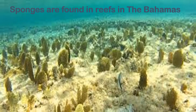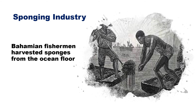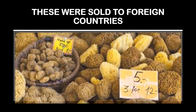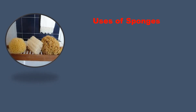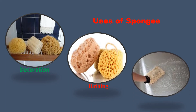You may find this invertebrate — sponges — in reefs in the Bahamas. Long ago, there were so many sponges in the Bahamas that we had a sponging industry. Bahamian fishermen harvested sponges from the ocean floor, and the sponges were gathered and sold to foreign countries. Today, people use sponges for many different things: decorating, bathing, and cleaning.